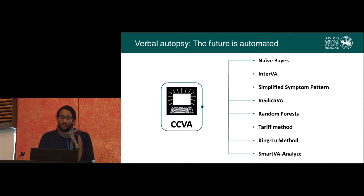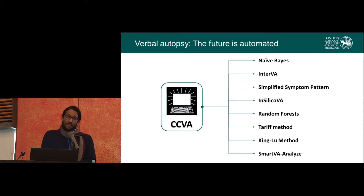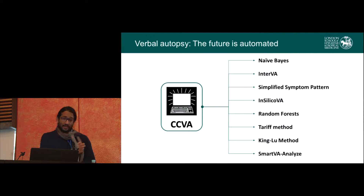Traditionally, VA data are interpreted by physicians who assign what they consider to be the most likely cause of death based on the answers to the questionnaire. But as you can imagine, that is time-consuming, expensive, and difficult to standardize across different contexts — it depends on the experience of your physicians and the quality of your data. So increasingly there's a push to do this through automated methods, and lots of different people have tried different approaches.